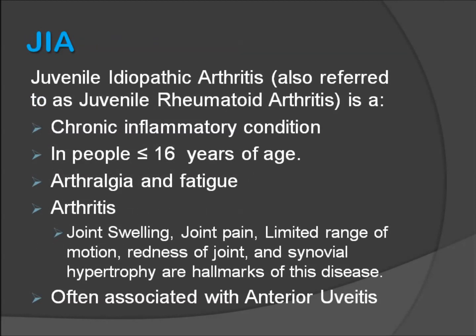Slide 3 shows some of the key features of this disorder. It's a juvenile form of idiopathic arthritis — a chronic inflammatory condition with no defined cause in people less than 16 years of age. The disease commonly occurs in children from ages 7 to 12, but may also occur in adolescents as old as 16, as well as in infants. Patients present with joint symptoms such as pain, swelling, limited range of motion, redness of the joints, and synovial hypertrophy. One of the most concerning presentations is an inflammatory eye disorder called anterior uveitis.